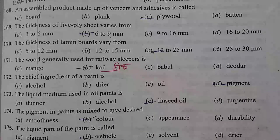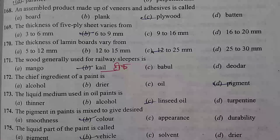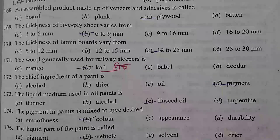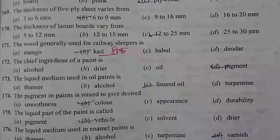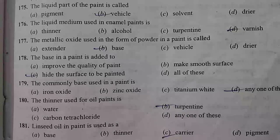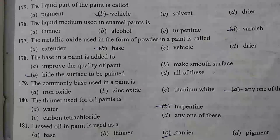The wood generally used for railway sleepers is called teak. The chief ingredient of pigment paint is pigment. The liquid medium used in oil paint is linseed oil. The pigment in paint is mixed to give desired color. The liquid part of a paint is called the vehicle. The liquid medium used in enamel paint is varnish.